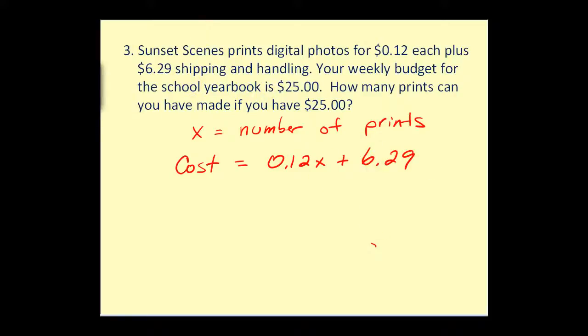So the total cost is going to equal 12 cents for every print. Well, that would be 12 cents times x plus the shipping and handling cost of $6.29. So the equation that we want to solve, since we have $25 to spend, we want to set this expression for cost equal to 25. Now we could multiply it by 100 to clear the decimals. But since we're going to use the graphing calculator, let's go ahead and just do this in its current form. First step, we would subtract 6.29.